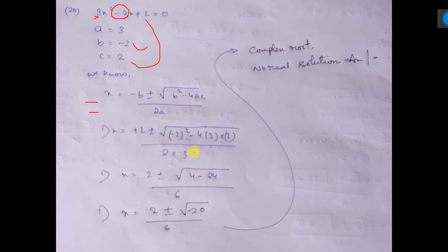Here you see, it is coming 4, and here, 3 twos are 6 into 4, that is 24. Now, 4 minus 24 is minus 20.